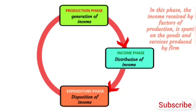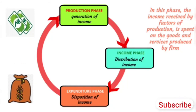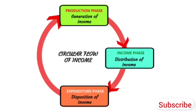Expenditure Phase: In this phase, income received by the factors of production is spent on goods and services produced by the firm. The income generated in the production units reaches back to the production units and makes the circular flow complete.